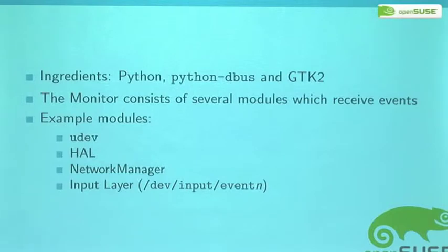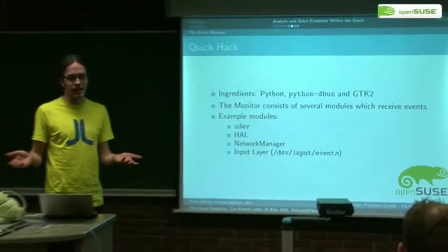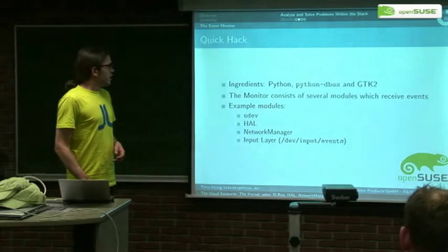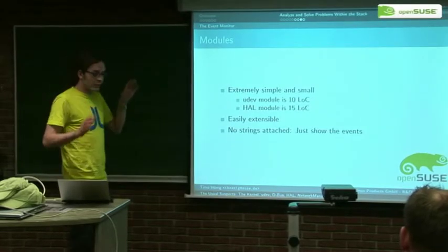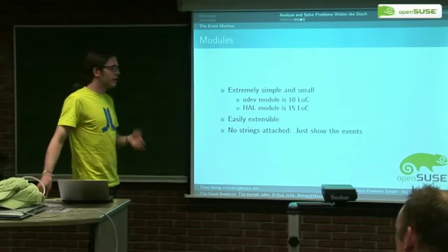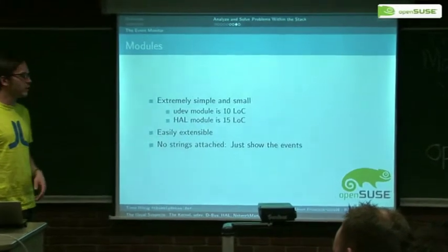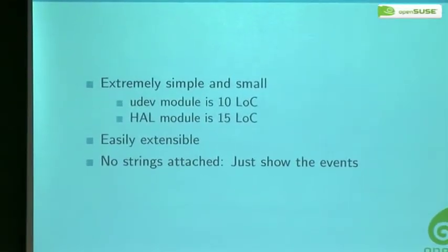I've created several monitors for each of the event sources, like UDEV, HAL, Network Manager, and Window Manager. Those modules are pretty dumb — they just read the events, and once there's an event on one of the event sources, they just send out a notification to the desktop. So it's very convenient to look whether there's any activity. I already put the source online — even if you don't do anything with Python, you will understand the code, because the 10 lines for the UDEV monitor are pretty straightforward. Also for HAL, it's just 15 lines of code. I used subclassing to implement the monitor, so whenever somebody wants to integrate another event source, you will only need a few lines of code to get it working.